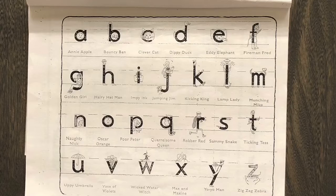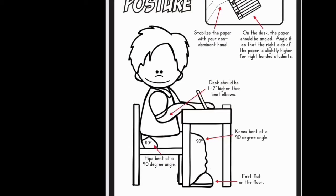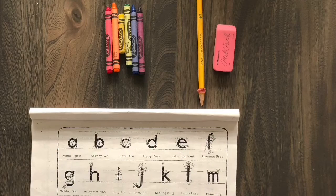First grade, this is Mrs. Hobbs, and we're getting ready to do handwriting together. You'll need a space where you can stand up and have plenty of room around you because we'll be writing the letters in the air. You'll also need a desk or a table where you can stand up straight or sit up straight.